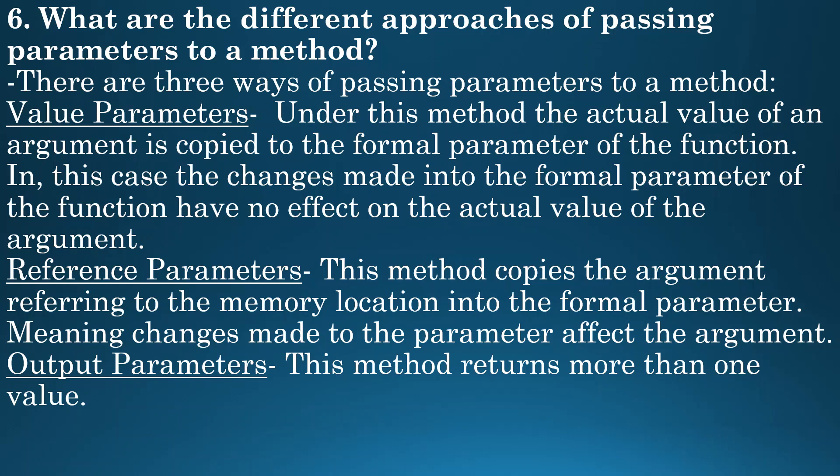Next is reference parameters — this method copies the argument referring to the memory location into the formal parameter, meaning changes made to the parameter affect the argument. Next comes output parameters — this method returns more than one value.